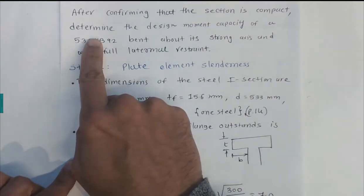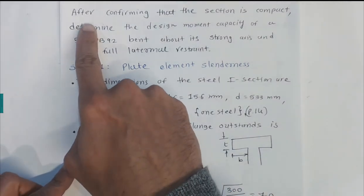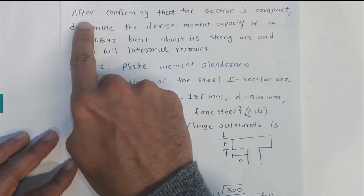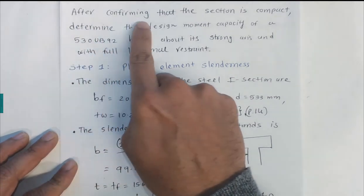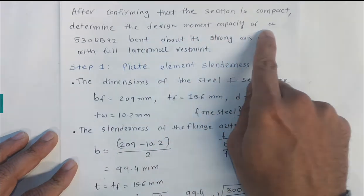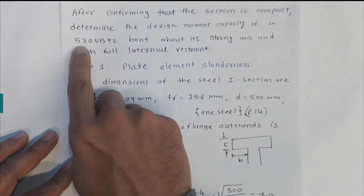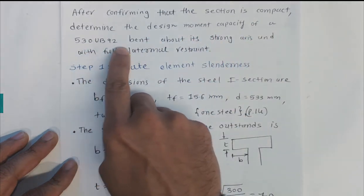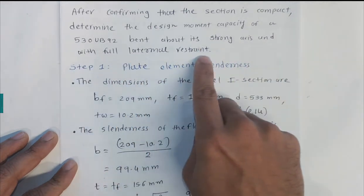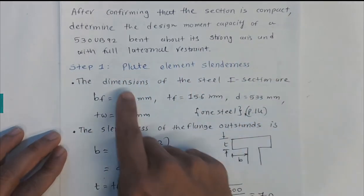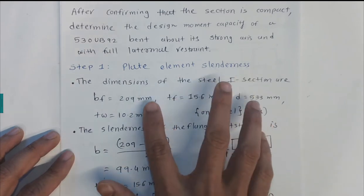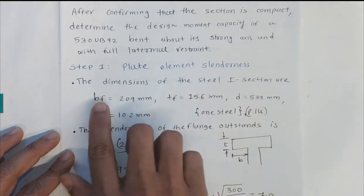This video explains an example for a beam under bending. After confirming that the section is compact, we are determining the design moment capacity of a 530 UB 92 bent about the strong axis with full lateral restraint. First, we need to find the plate element slenderness.